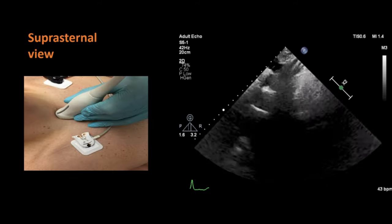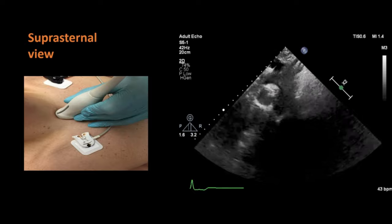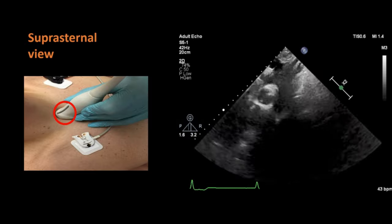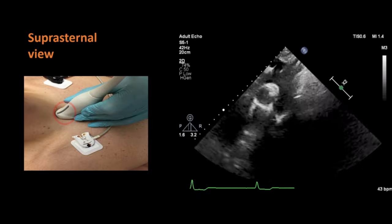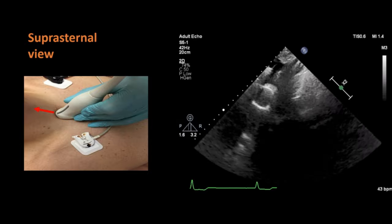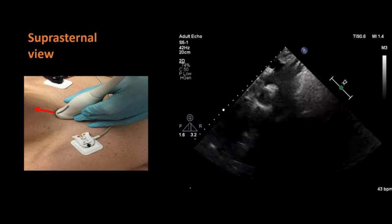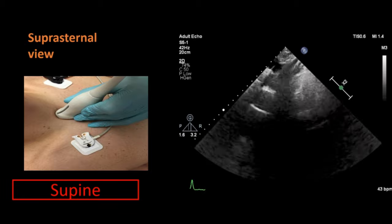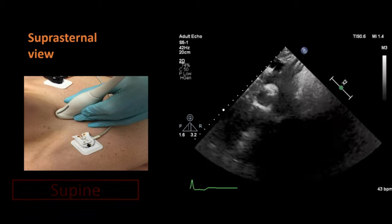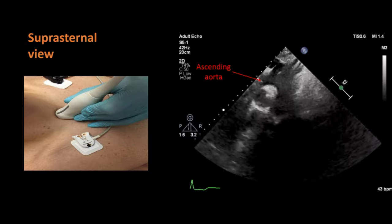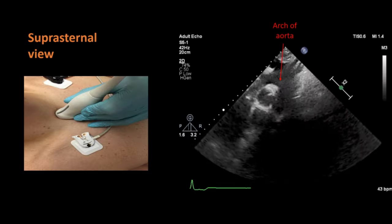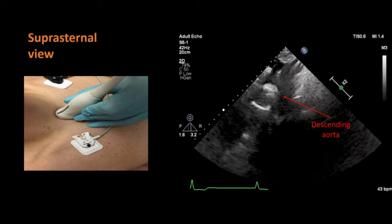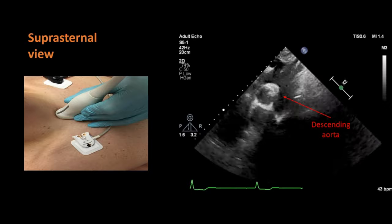For the suprasternal view, the transducer probe is placed in the suprasternal area, just above the superior margin of the manubrium sterni. The orientation marker points superiorly and the patient lies supine. In this view, you can see the ascending aorta, arch of aorta, and descending aorta. You will be able to see coarctation of aorta in this view if it is present.